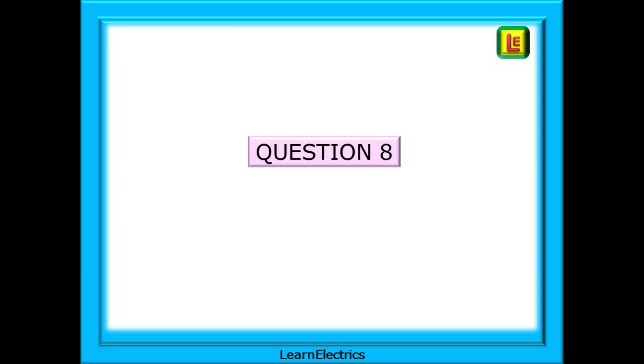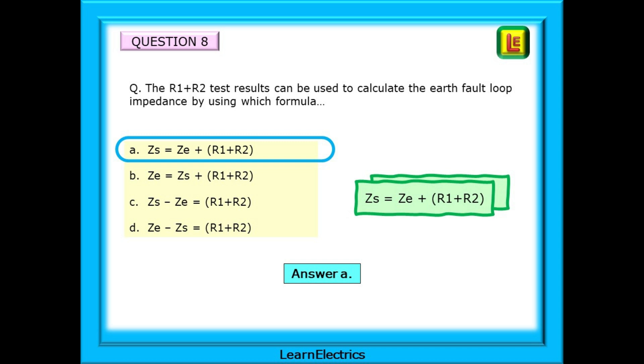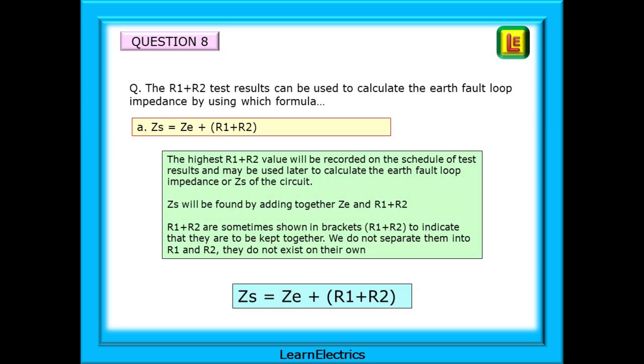Question 8. An essential to know. The R1 plus R2 test results can be used to calculate the earth fault loop impedance by using which formula? There is now a choice of formulas. Only one will answer the question. Pause the video and answer the question. The answer is A. Earth fault loop impedance or ZS is equal to ZE plus R1 plus R2. This is one of those must know formulas, something you will be able to recall without thinking. The highest R1 plus R2 value will be recorded on the schedule of test results and may be used later to calculate the earth fault loop impedance or ZS of the circuit. ZS will be found by adding together ZE and R1 plus R2.